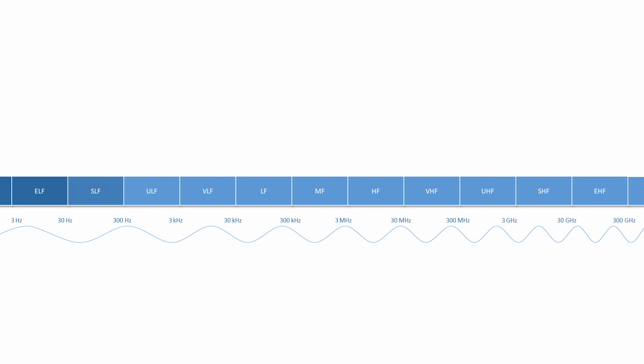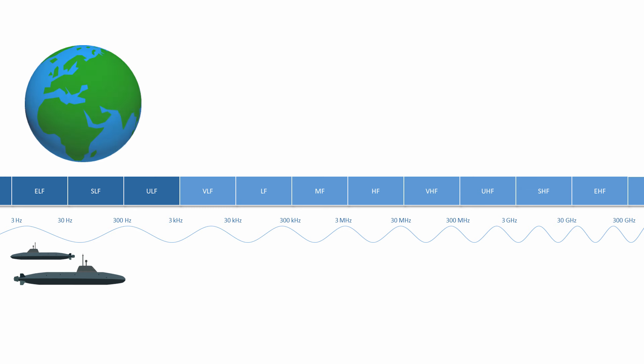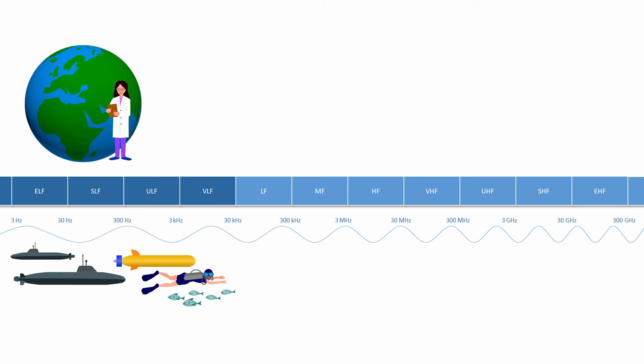For example, the extremely low, super-low and ultra-low frequency bands between 3 Hz and 3 kHz are used for communication by submarines and by scientists to study earthquakes. The very low frequency band, VLF, between 3 kHz and 30 kHz is also used for submarine communication and in other maritime applications.